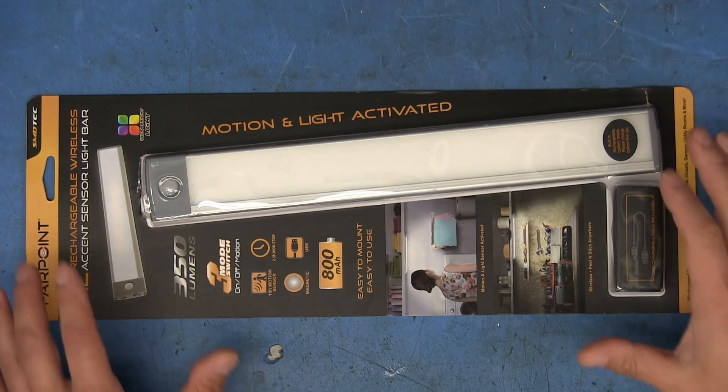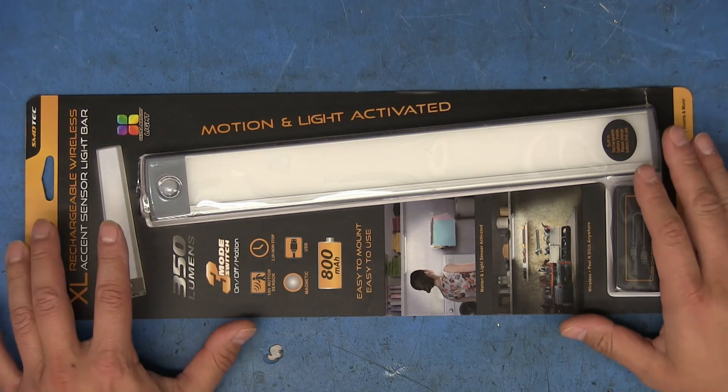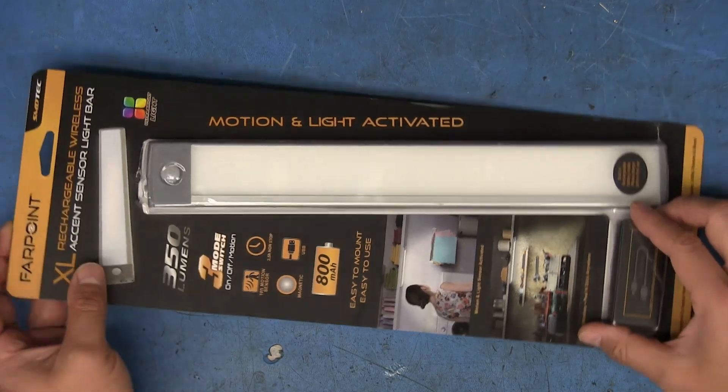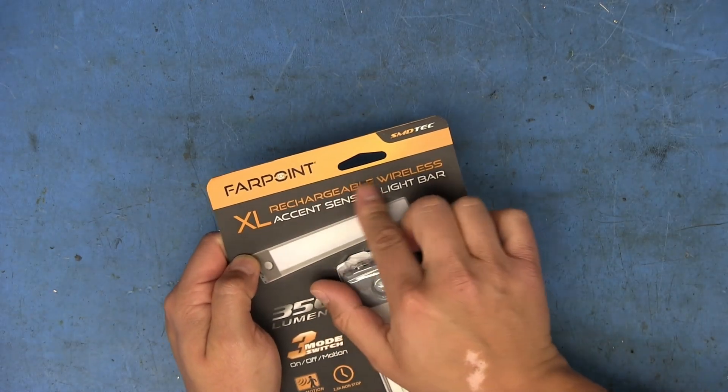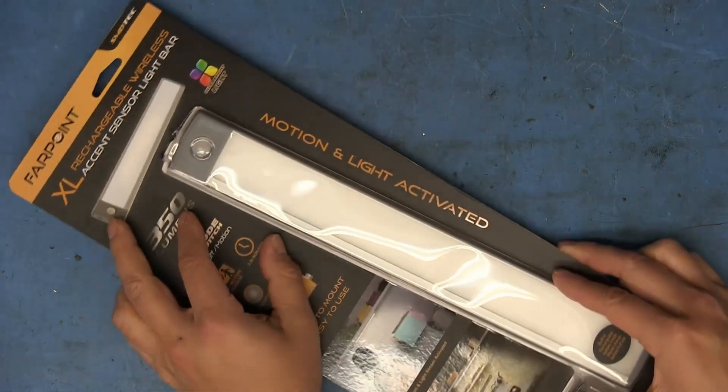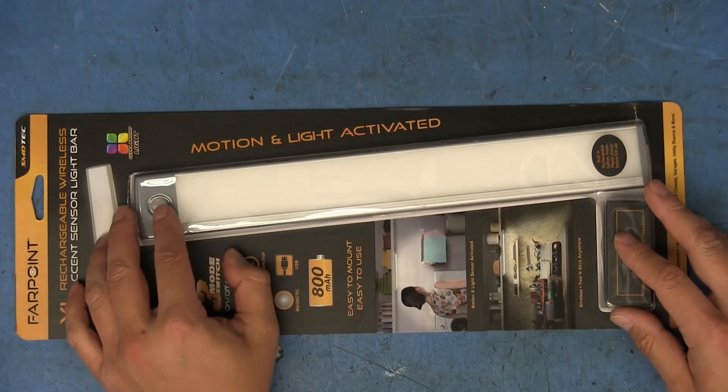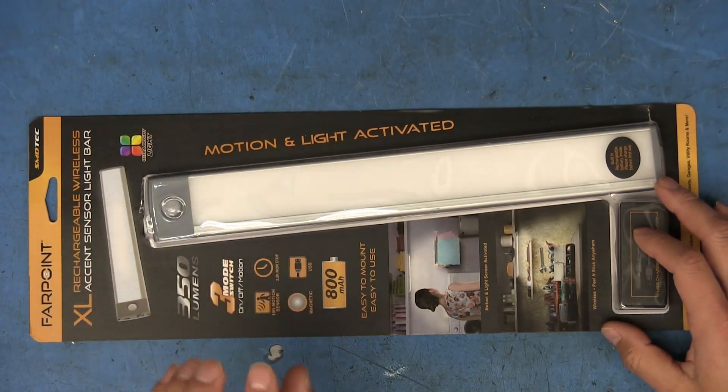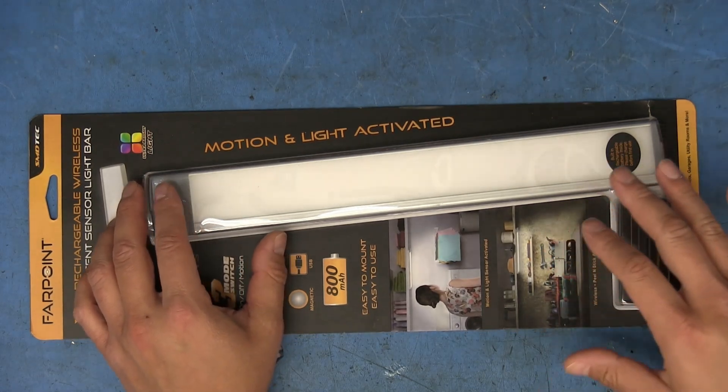Hey, what's up people? I've got this thing here that I bought not with the intention of making a video about it but I was actually going to use. This is a Farpoint branded XL rechargeable wireless accent sensor light bar. I got this thing due to the fact that it's motion activated.